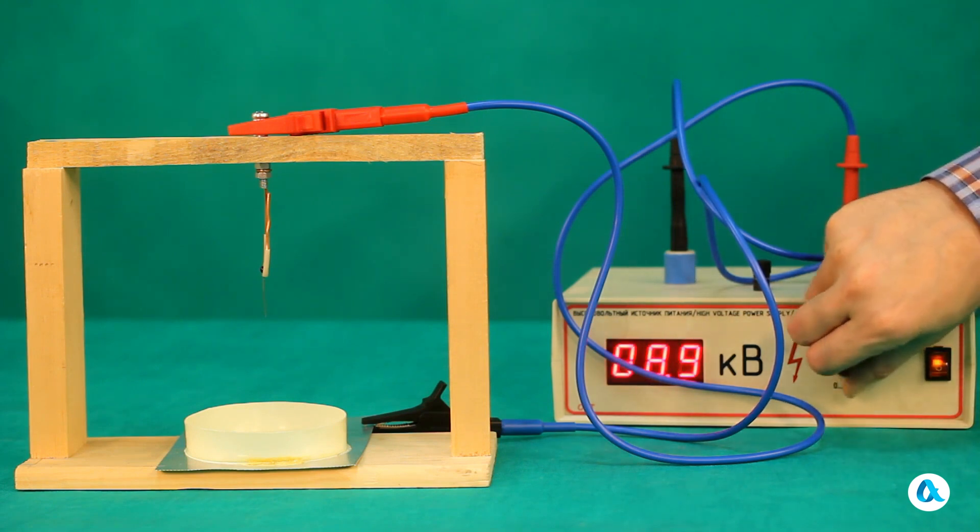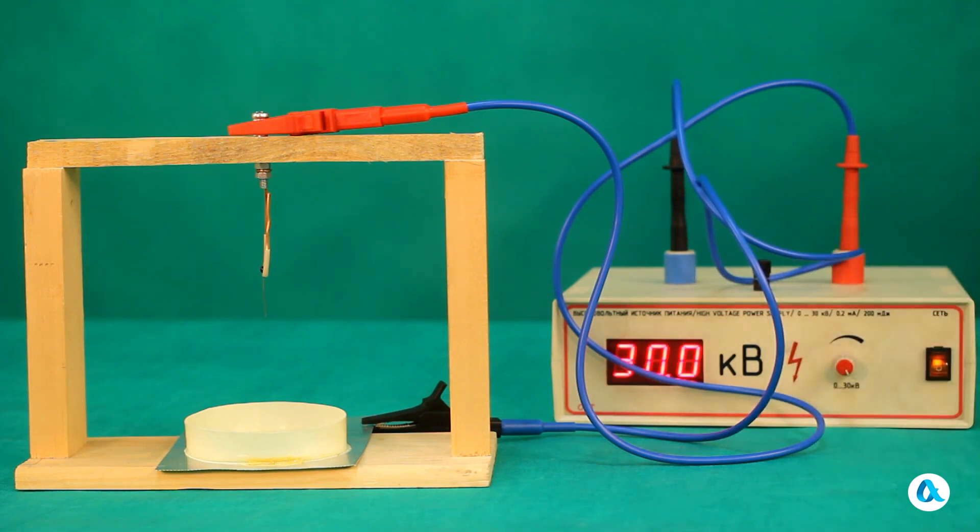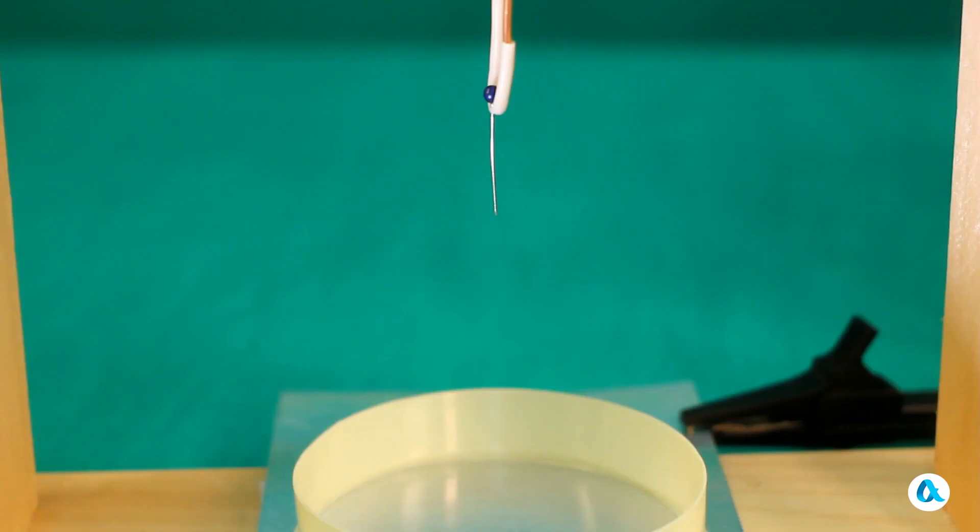If we apply a high voltage to these electrodes, a corona discharge appears at the needle, which we've already discussed in one of our previous videos, and the ionic wind begins to blow toward the plate. Now let's pour a thin layer of sunflower oil inside the rim and gradually increase the voltage.